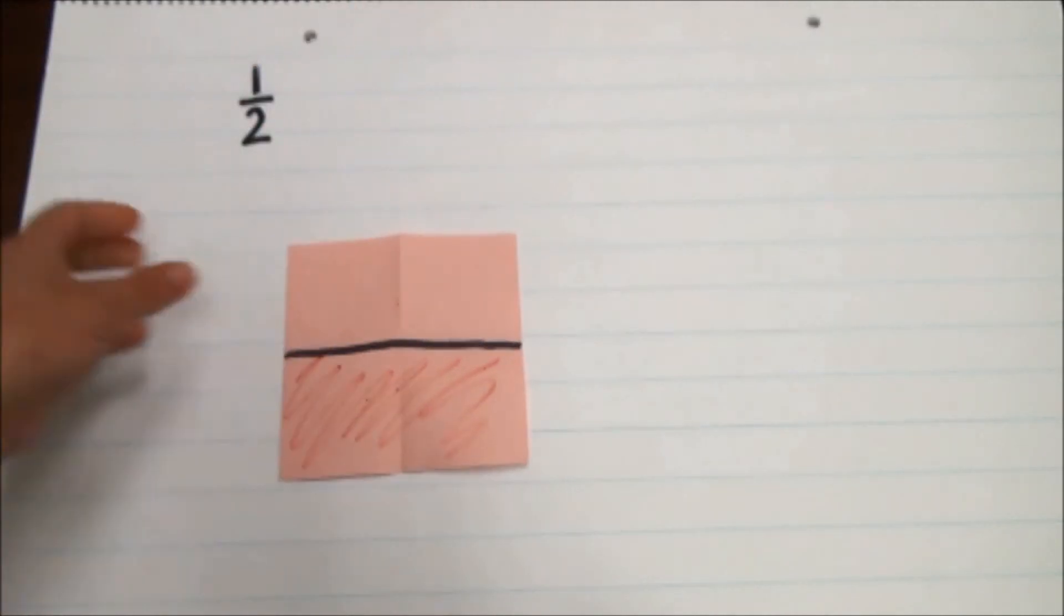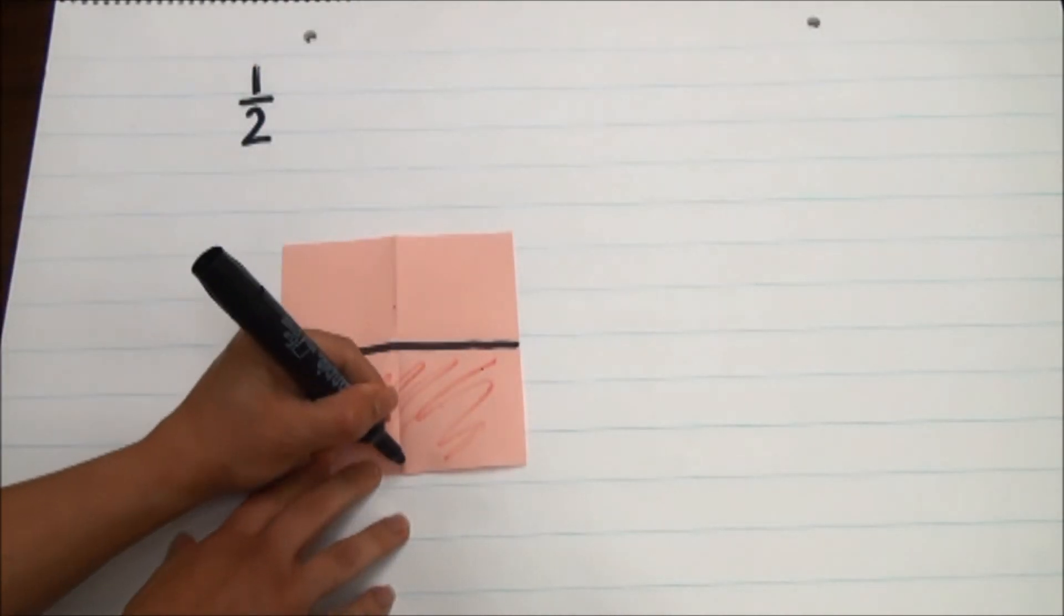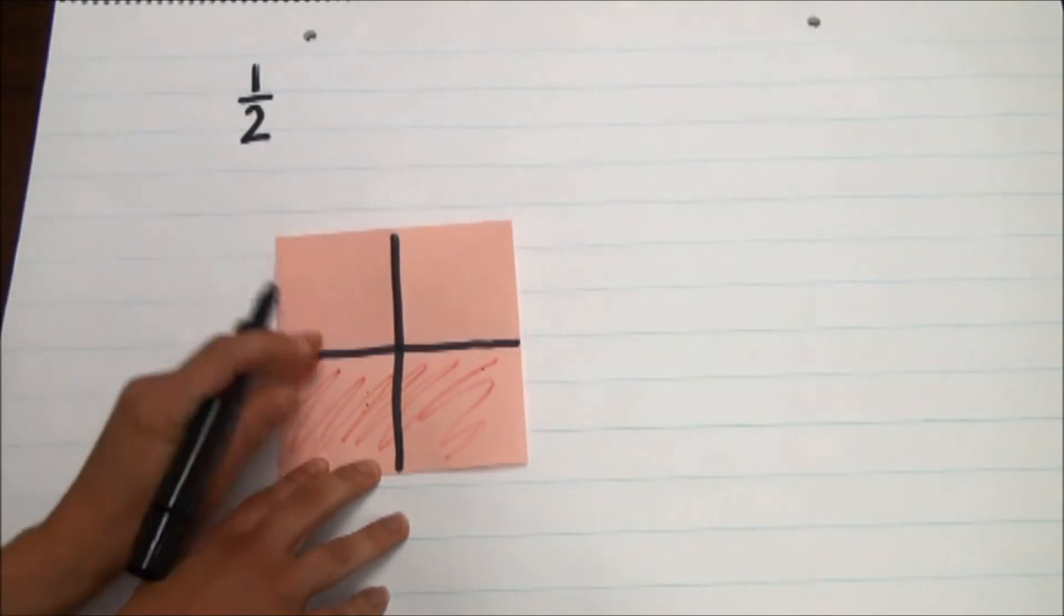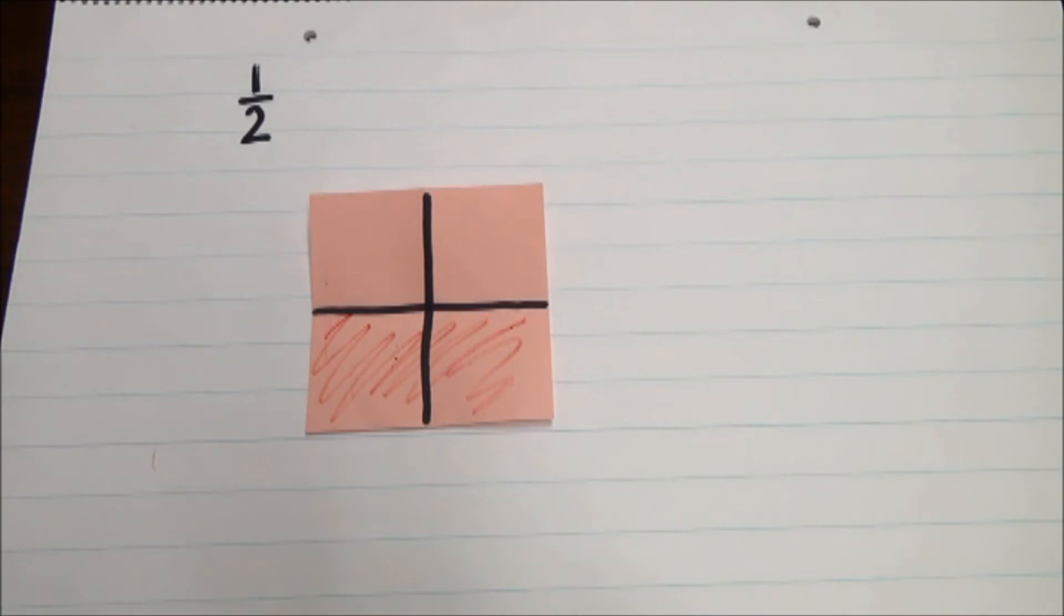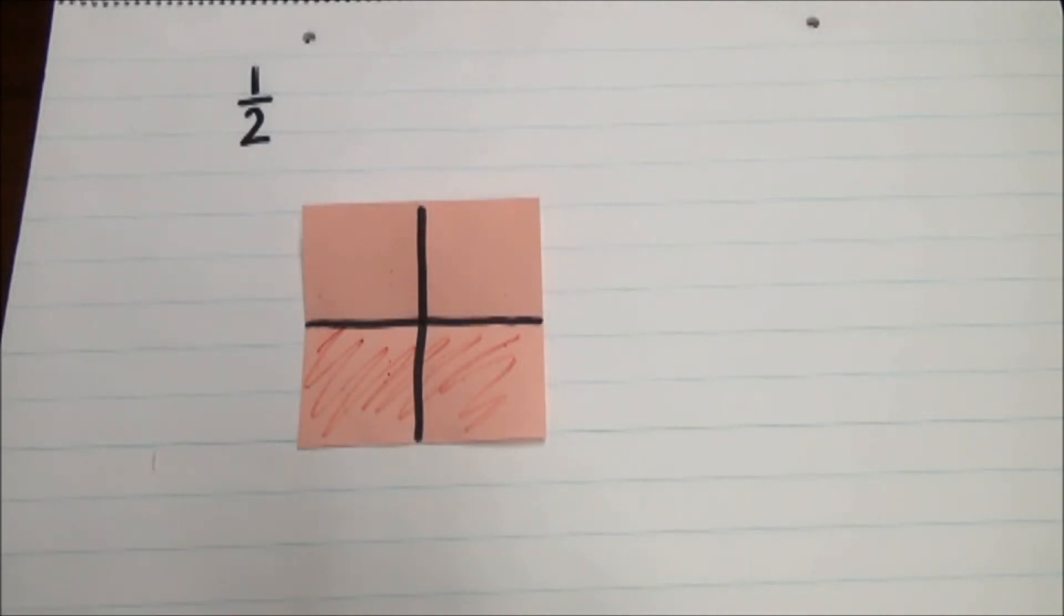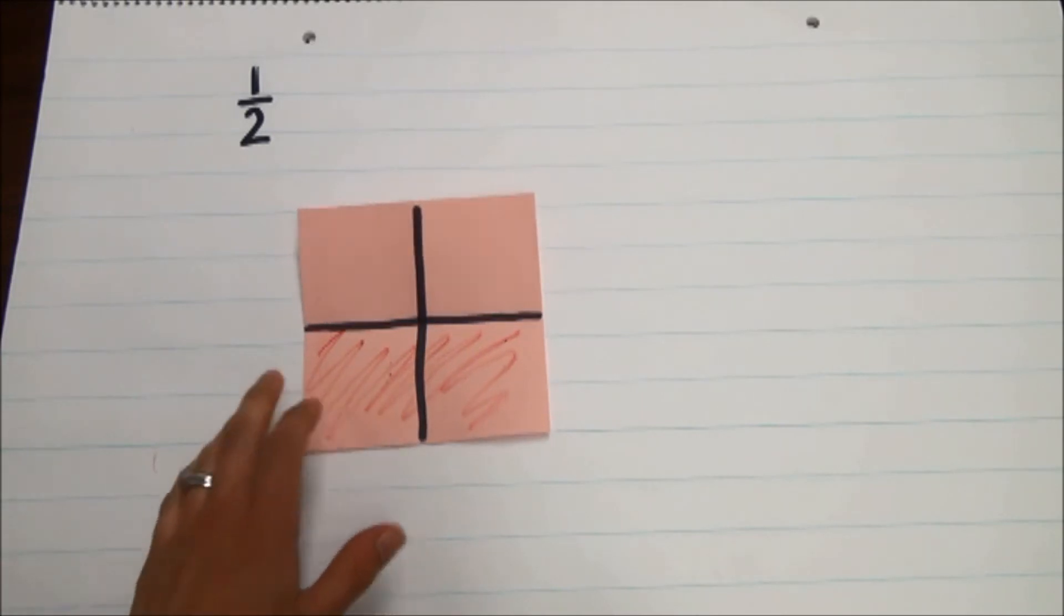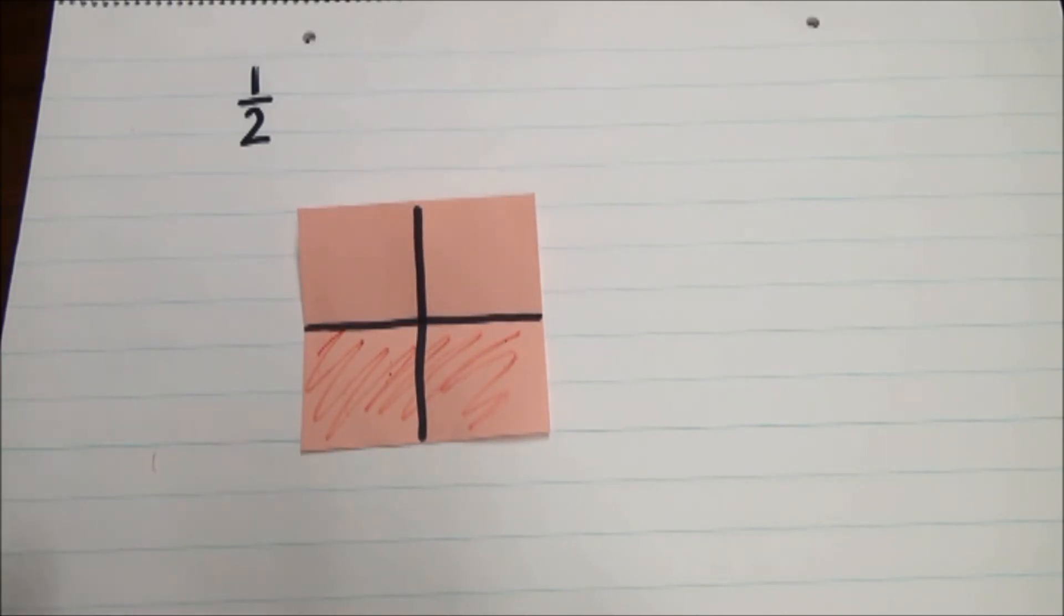Then I would ask the students to refold the paper, then I would ask them to fold it again. When students open the paper, I would ask them to identify now what fraction of the paper is shaded. Again, I would probably highlight my fold a little bit so the students could see it. And at this point, students would say that two-fourths of the paper is shaded. And I would ask students, did you change something? Did you color something extra? Did you take anything away? And the answer is no. So what changed?